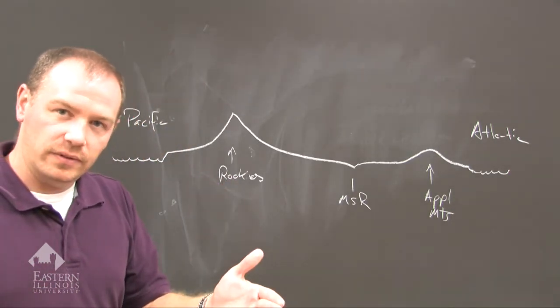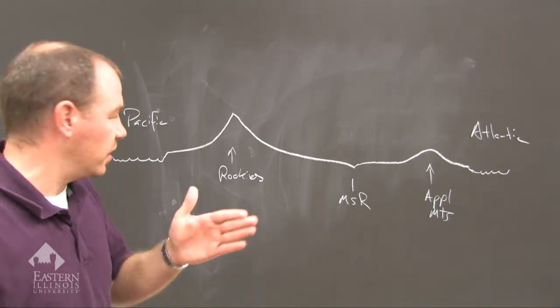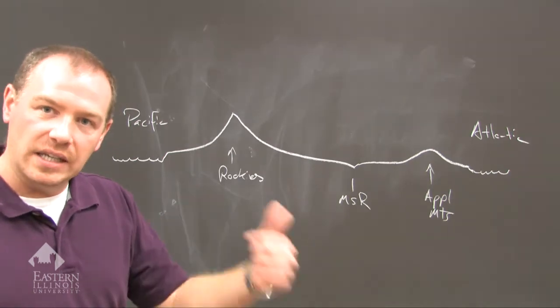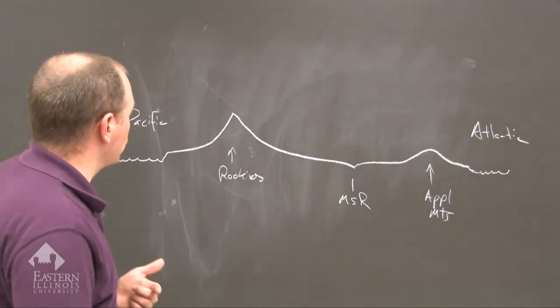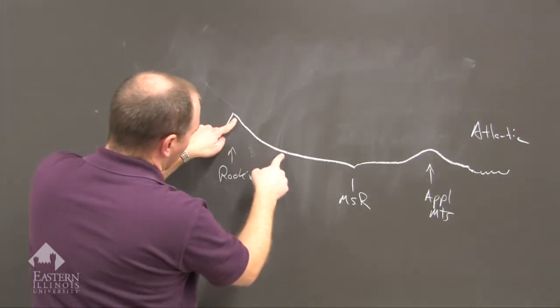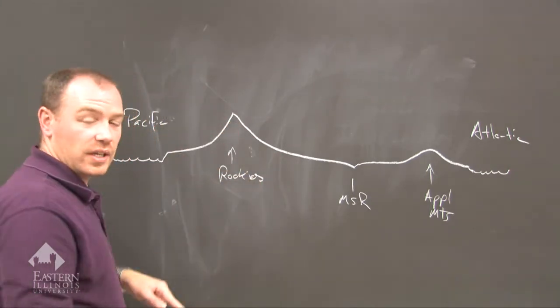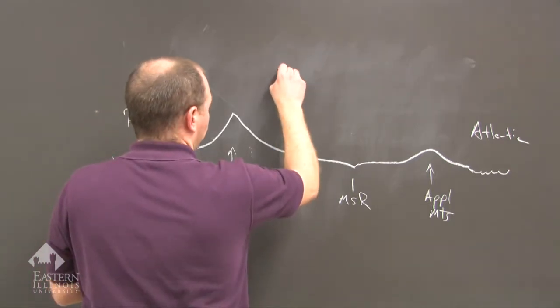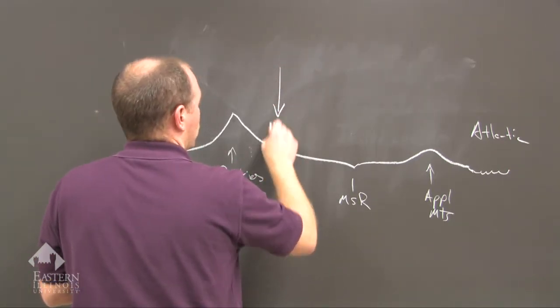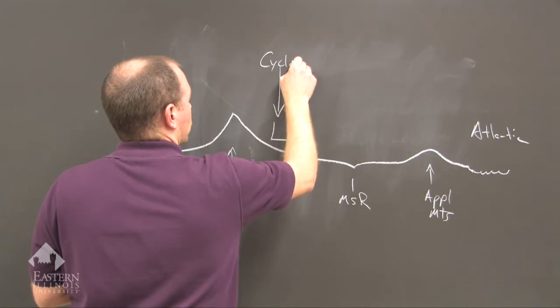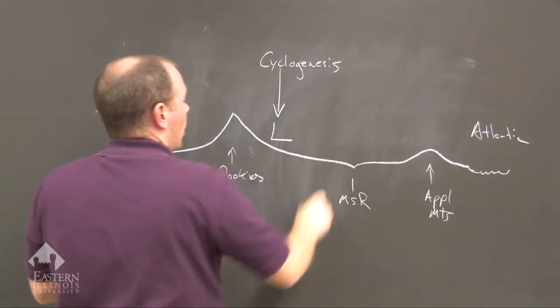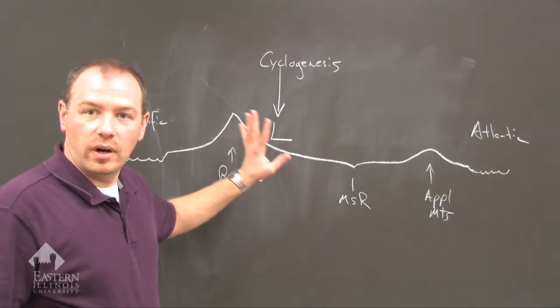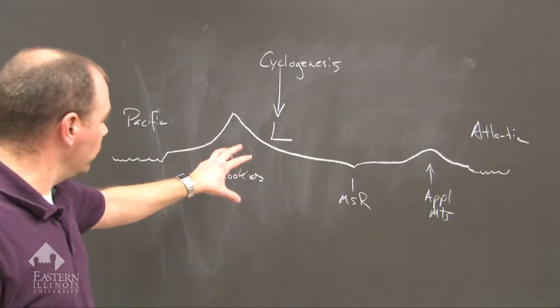If you looked at that map from the previous video lecture, all of those points began on the eastern side of the Rockies. So as the air descends the Rockies on the eastern side, it warms up and will force cyclogenesis to occur. These are the points of strong cyclogenesis where the mid-latitude cyclone will form.